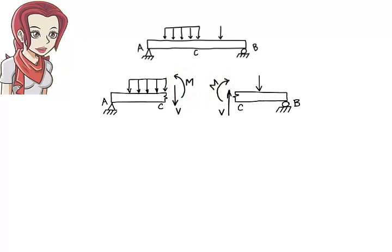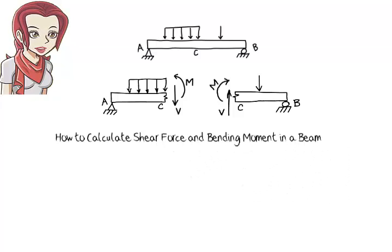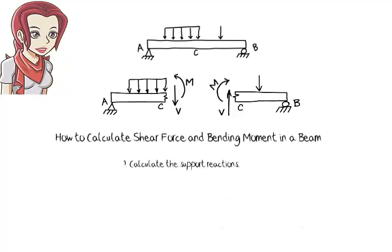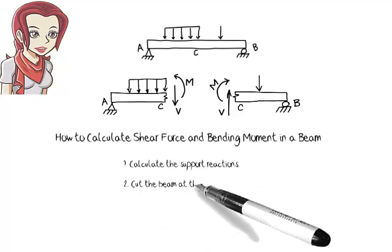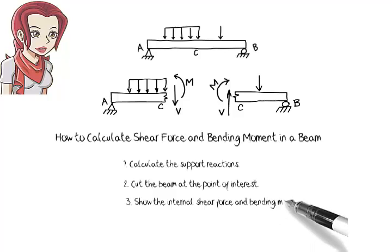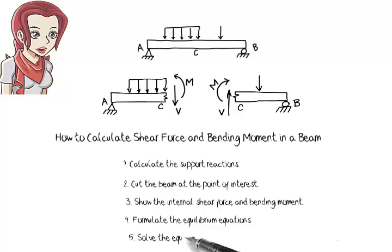Now let's see how we can actually calculate shear and moment at a point in a beam. The procedure is rather straightforward: 1. Calculate the beam's support reactions. 2. Conceptually cut the beam at the point of interest. 3. Show the internal forces at the cut point and draw each segment's free body diagram. 4. Formulate the equilibrium equations for either the left or the right segment. 5. Solve the equations for the unknown shear force and bending moment.